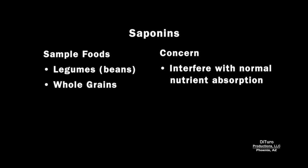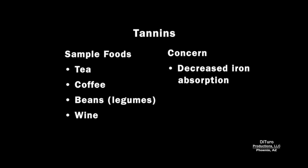Saponins, found in beans and whole grains, appear to interfere with normal nutrient absorption. Tannins in tea, coffee, beans, and wine may decrease iron absorption. The key word here is that they may decrease iron absorption — it doesn't mean that they prevent iron absorption.